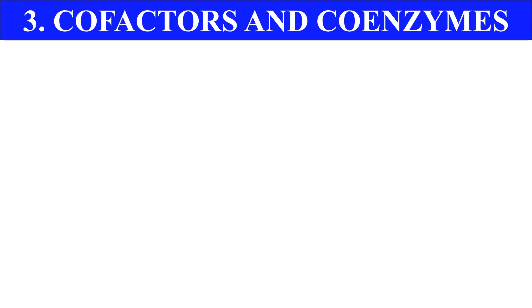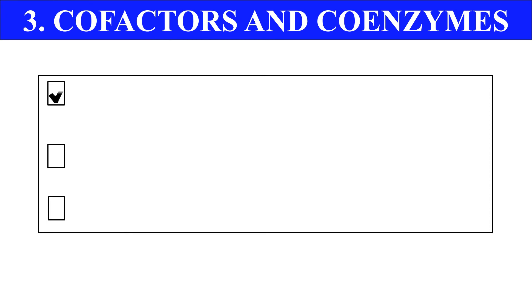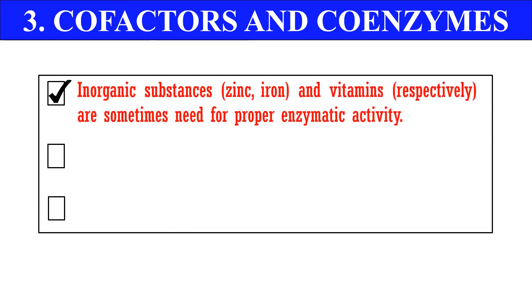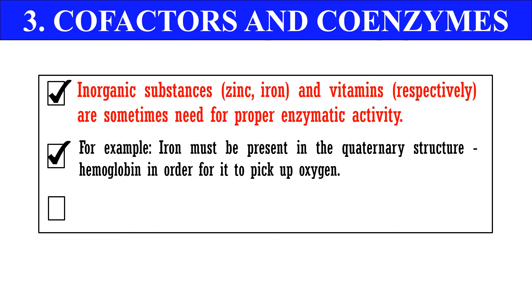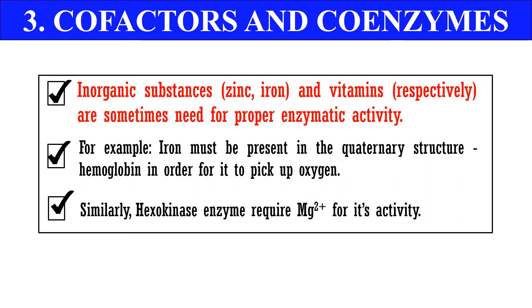The next factor affecting enzyme activity is cofactors and coenzymes. Enzymes require certain inorganic or organic compounds for their functioning. For example, iron must be present in the quaternary structure of hemoglobin in order to pick up oxygen — without iron, hemoglobin will not work efficiently. Another example is hexokinase, a well-known enzyme involved in the glycolysis pathway, which requires magnesium (Mg²⁺) ions for its activity. Without magnesium ions, hexokinase will not work properly. Therefore, cofactors and coenzymes also limit enzyme activity.